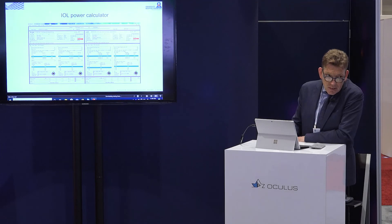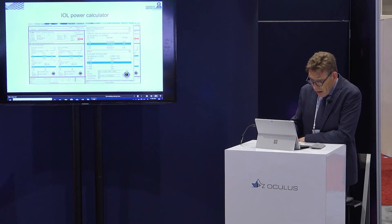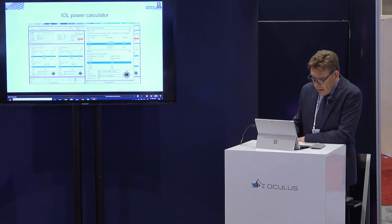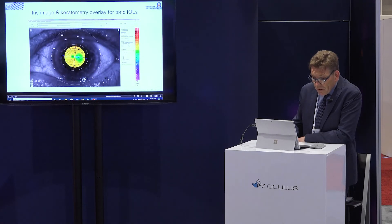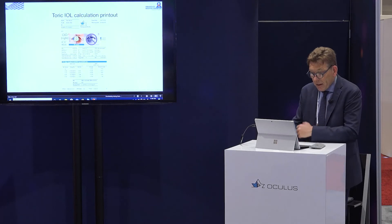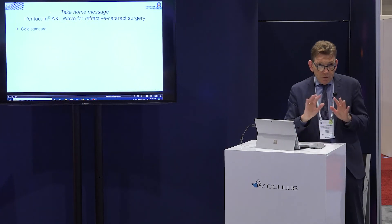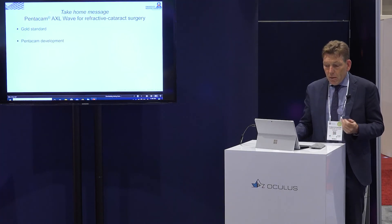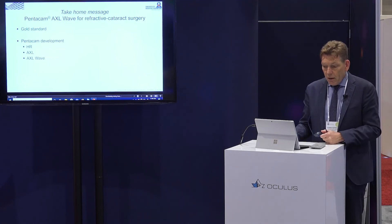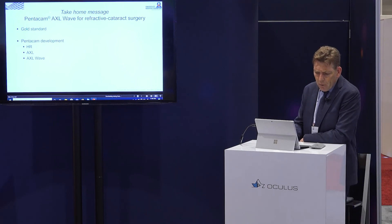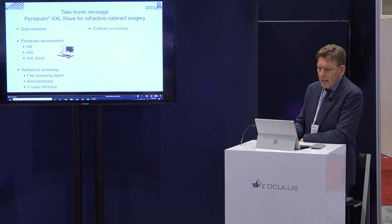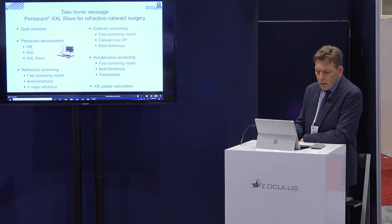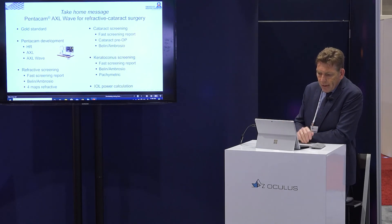For IOL power calculation, the device is also very useful. There are several calculation formulas available, such as the Savini formula. Here we chose an 11.5-diopter lens. You have iris image and keratometry overlay for the toric version as a printout for your IOL planning. This device is really being used for IOL calculation and is becoming our gold standard. The Pentacam development — from the original HR, to the AXL, to the AXL Wave — has been there for 20 years, covering refractive screening, cataract screening, keratoconus screening, and IOL power calculation.